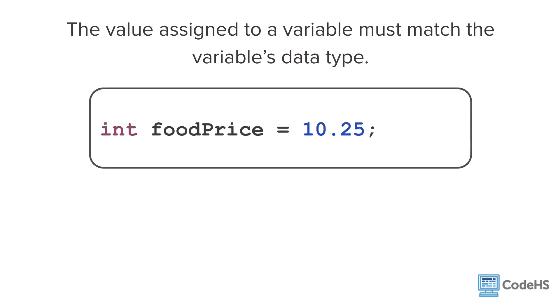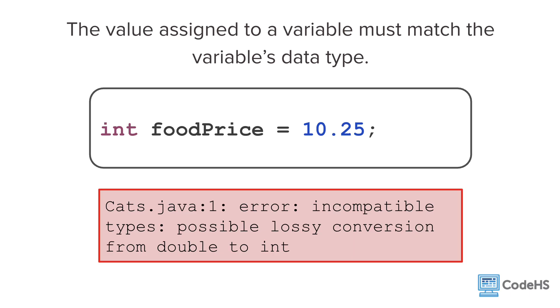Additionally, the value assigned to a variable must match the variable's data type. Here, the value assigned to food price is a double, but the variable's data type is an int. When this program runs, you will get an incompatible types error.